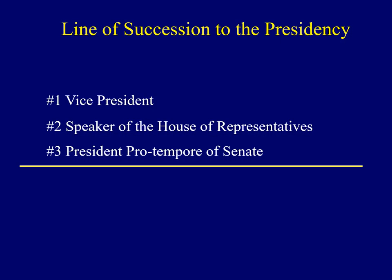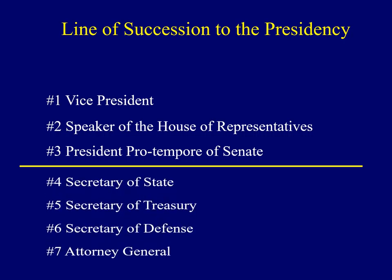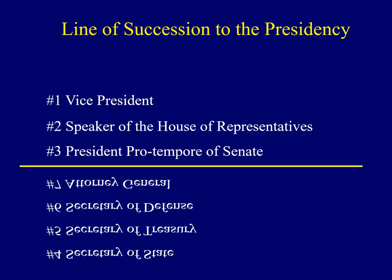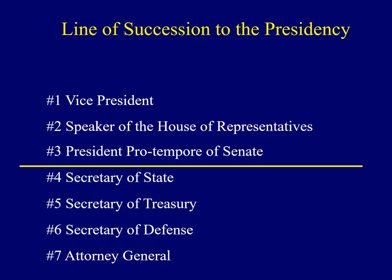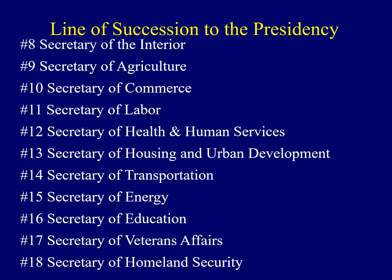The line of succession continues much further and is set by federal law. It begins with the Secretary of State, then Treasury, Secretary of Defense, and Attorney General, continuing on to additional cabinet-level positions. If something catastrophic were to happen, it might go all the way to the Secretary of Homeland Security.